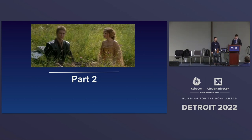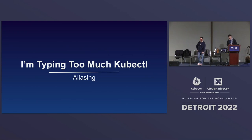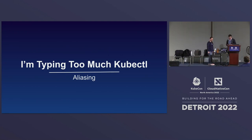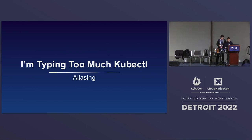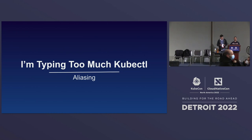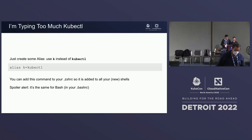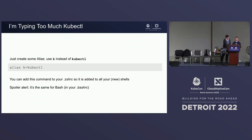Now we're starting to get into more interesting stuff. Luke Skywalker is getting older and starting to do more serious stuff. The first thing we want to address is that we're typing too much kubectl. Let's use aliasing. kubectl — K-U-B-E-C-T-L — it's too long. So let's use an alias: k equals kubectl. Now it's just k.